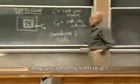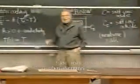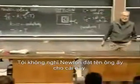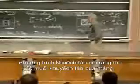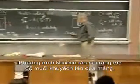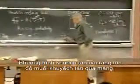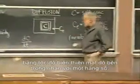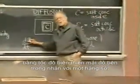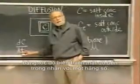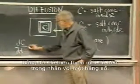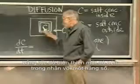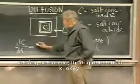Now, what's the equation? Well, the equation is the same except it's called the diffusion equation — I don't think Newton got his name on this. The diffusion equation says that the rate at which the salt diffuses across the membrane, which is the same up to a constant as the rate at which the concentration inside changes, is some constant, usually called K still.